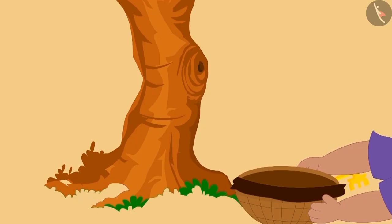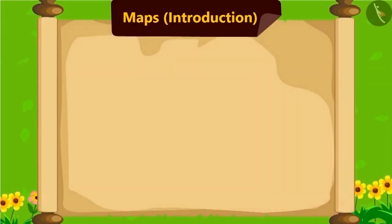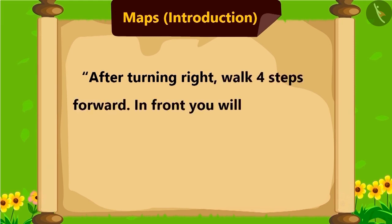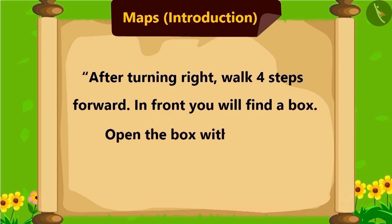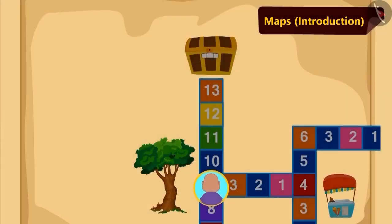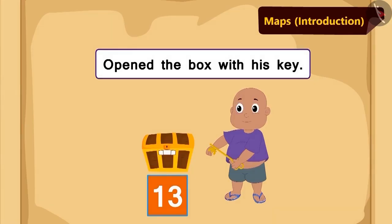And turn right as mentioned. This was written further in the instructions: after turning right, walk four steps forward. In the front you will find a box. Open the box with your key and you will get your treasure. As per the instructions, Bablu reached near the box and he opened the box with his key.